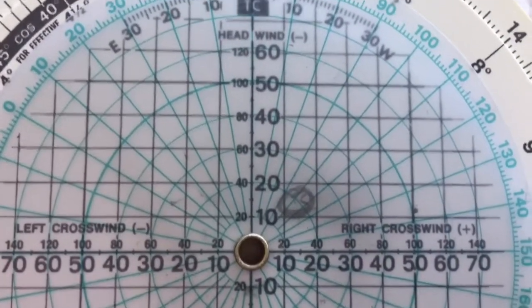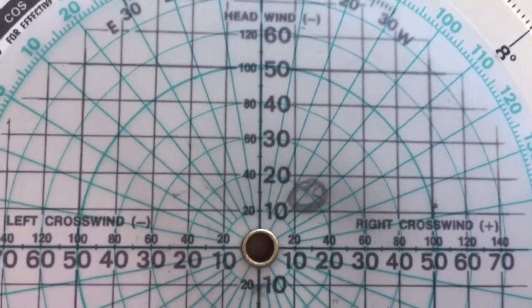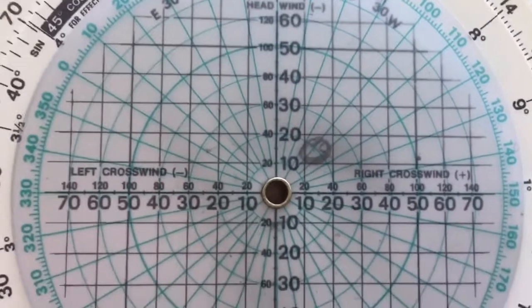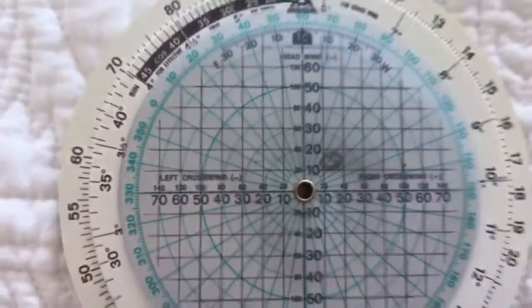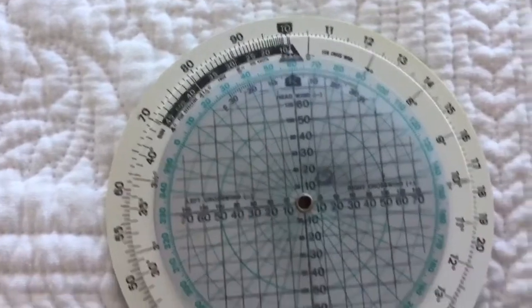We use the headwind to adjust our ground speed, and we use the crosswind to adjust where we need to point so that we don't get blown off course.